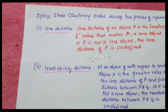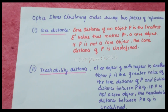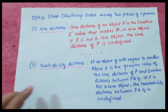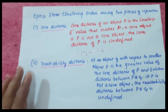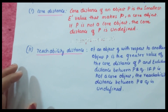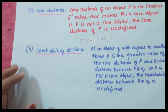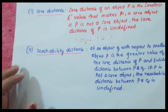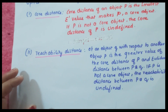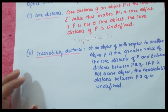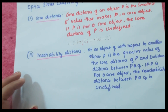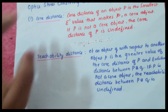The second piece is reachability distance. The reachability distance of an object q with respect to another object p is the greater value of the core distance of p and the Euclidean distance between p and q. If p is not a core object, the reachability distance between p and q remains undefined.